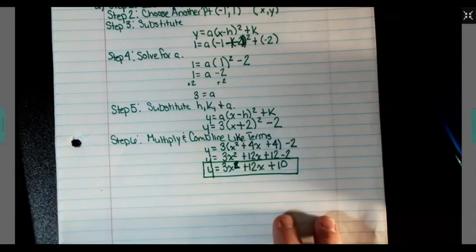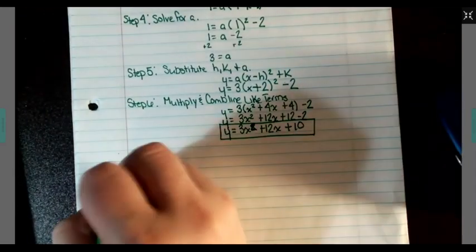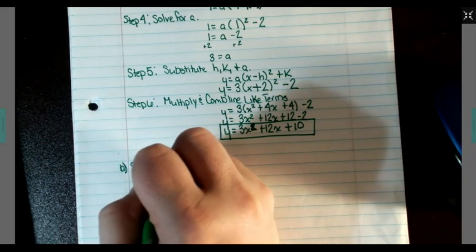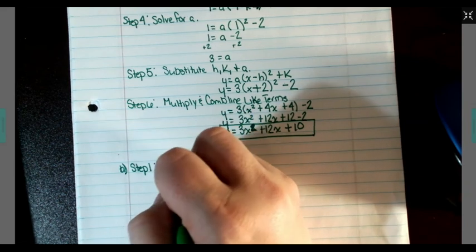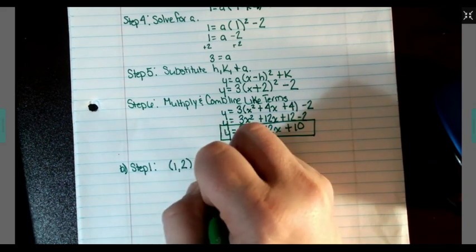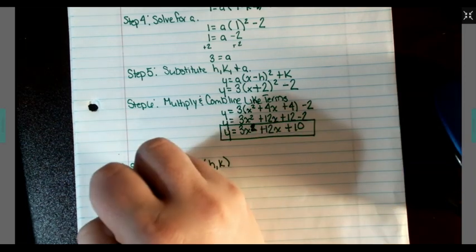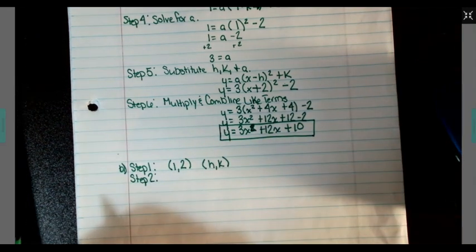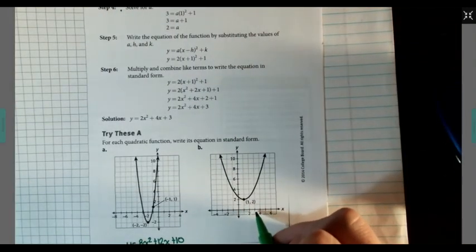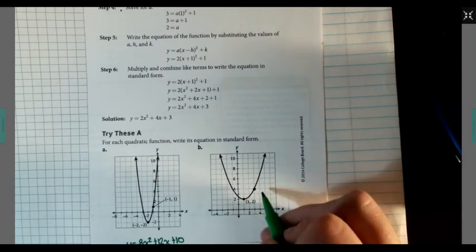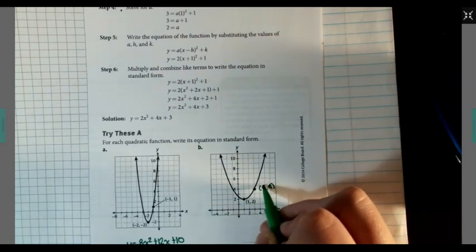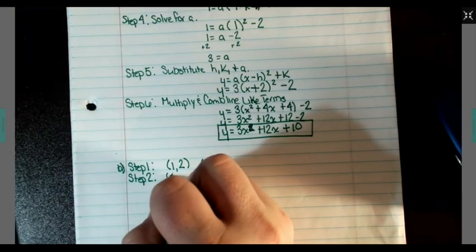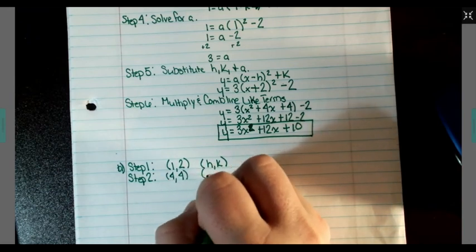Let's go ahead and take a look at B. Step 1: We've got 1, 2. So again, remember that's H and K. Step 2 was to identify another point and call it XY. Looks like there's another point located right there at 4, 4. So we'll use that one.